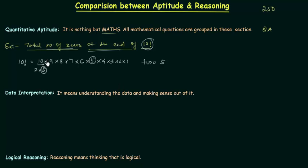This is how you can calculate the number of zeros — in this we have to use our mathematical skills, which is why this question comes under the section of quantitative aptitude.